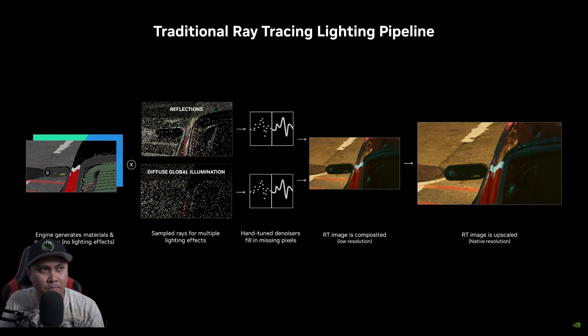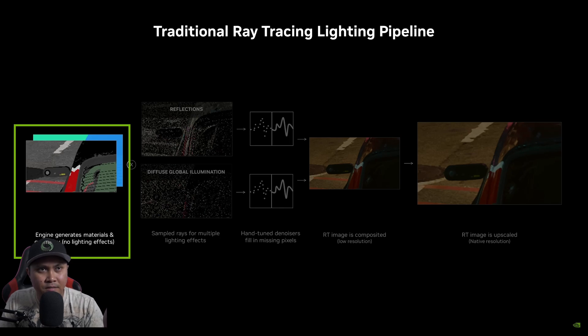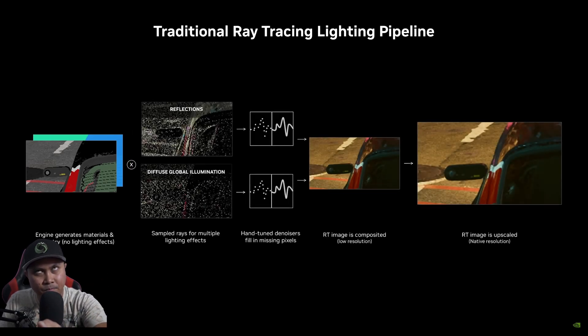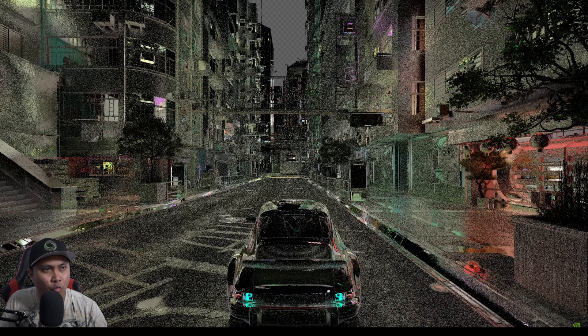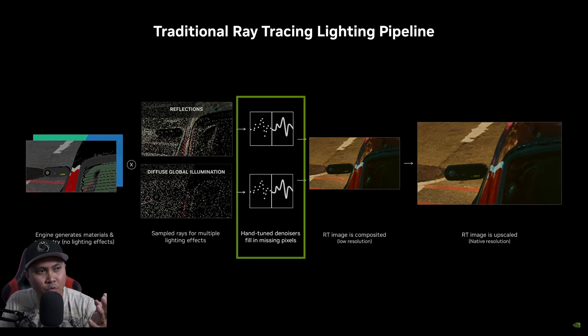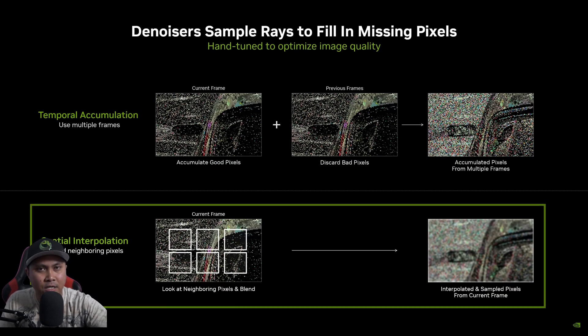My counter argument is that a video game is not real at the end of the day — a video game is fake frames anyway. So if we're looking at the RTX 40 lineup, the 4060 is $299 and the 4060 Ti is $399. Now we have DLSS 3.5 with Ray Reconstruction, and with Cyberpunk in RT Overdrive — that's basically path tracing — you can hate on NVIDIA all you want.